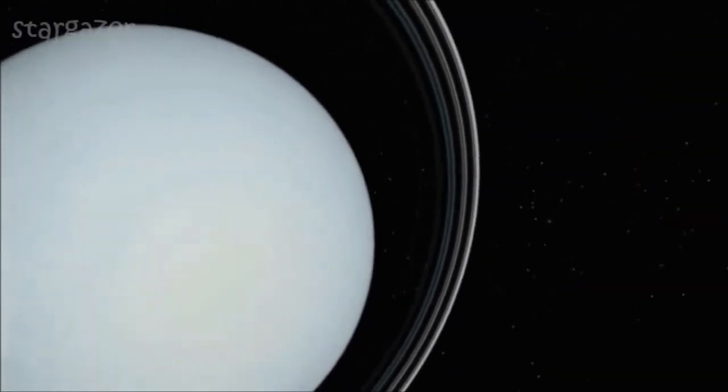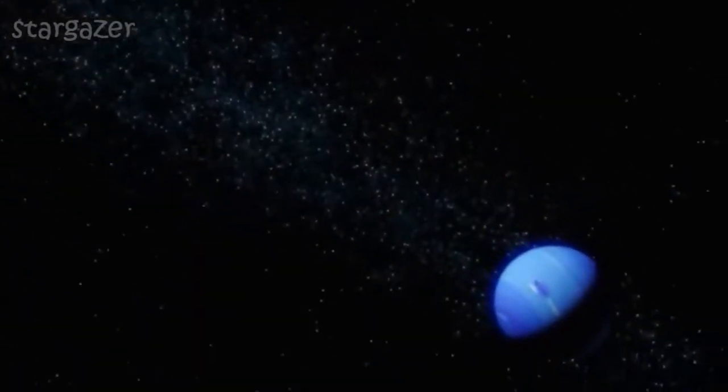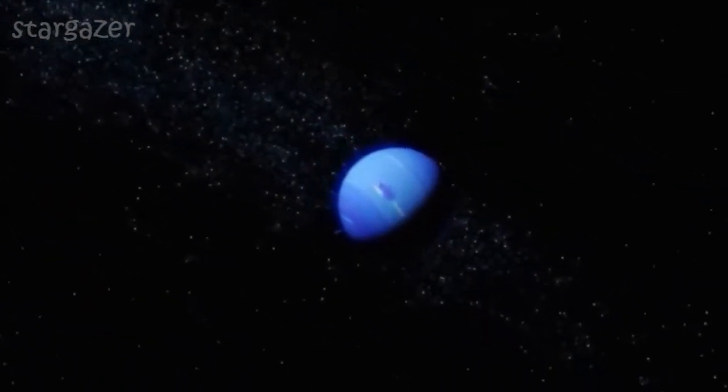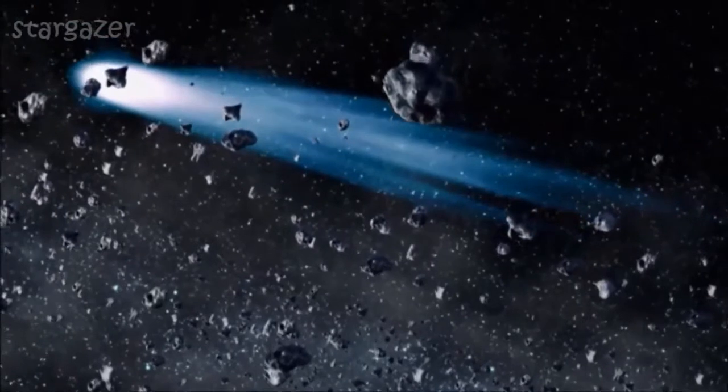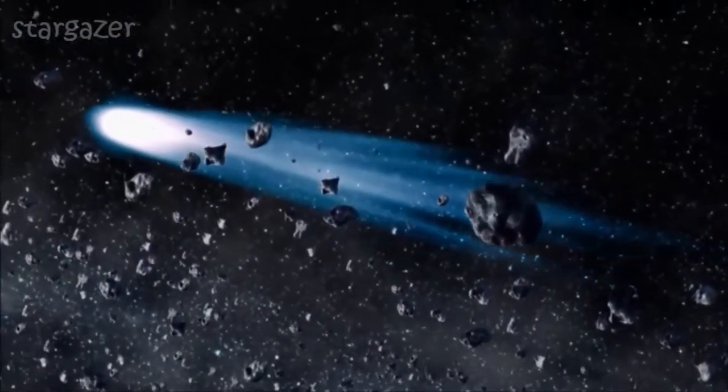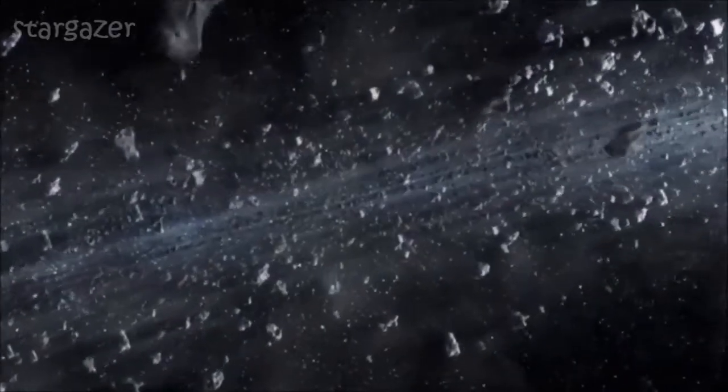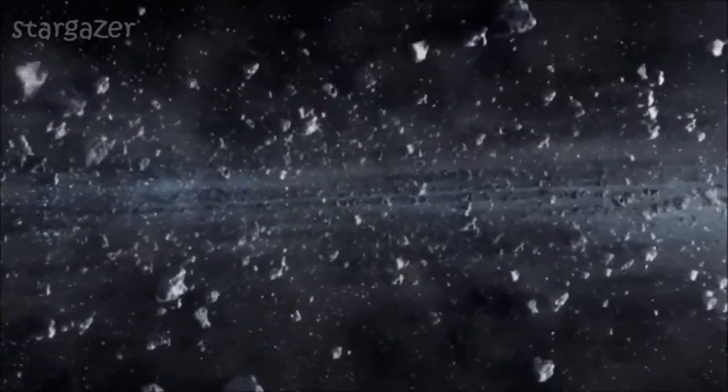Although much of the matter had been enveloped into the planetoids up to this point, there were still many smaller bodies left over, not considered large enough to be deemed planetoids. These comet-like bodies ended up in a large ring called the Kuiper Belt.